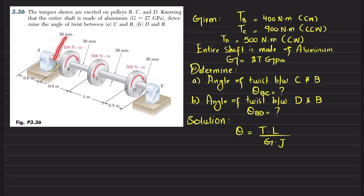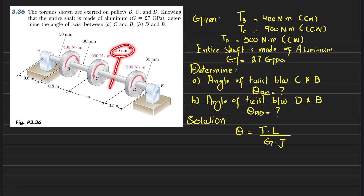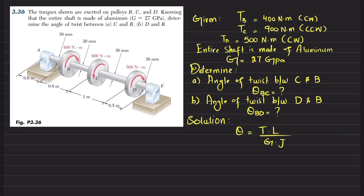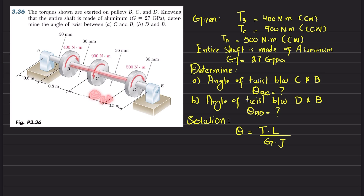Knowing that the entire shaft is made of aluminum with G = 27 GPa, determine the angle of twist between C and B, and D and B. The diameter of rod BC is 30 mm, the diameter of rod CD is 36 mm. So we have to find the angle of twist between B and C, and the angle of twist between B and D. Let's start with the solution.